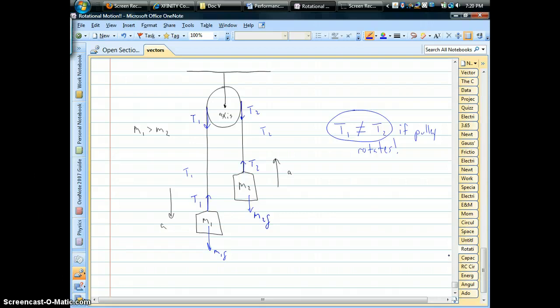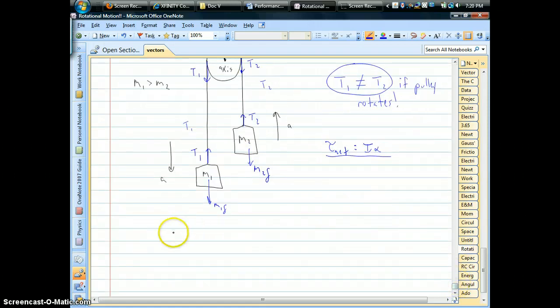We have both types of motion. We've got linear motion of the two masses. We've got rotational motion of the pulley. So, that means we have to do torque equals I alpha for the pulley to account for rotational motion, and we have to do F equal MA for both of the masses.